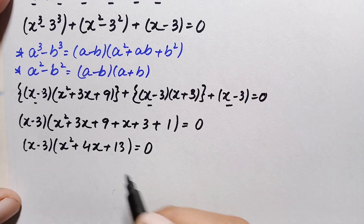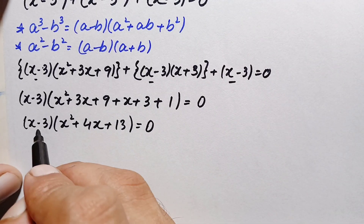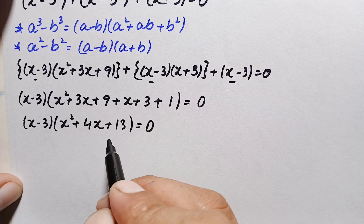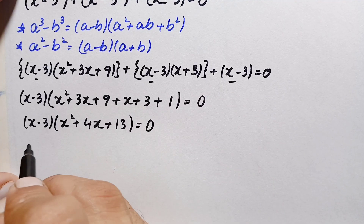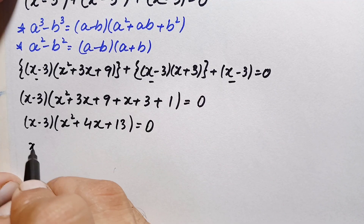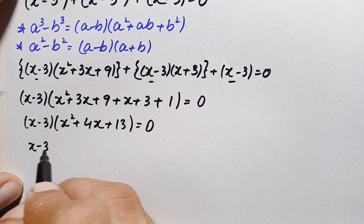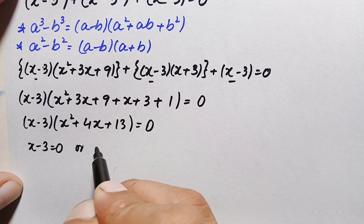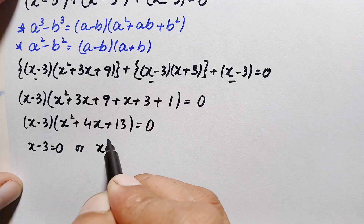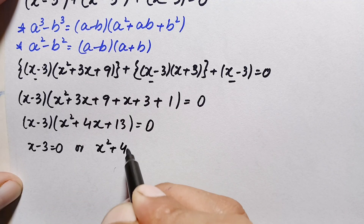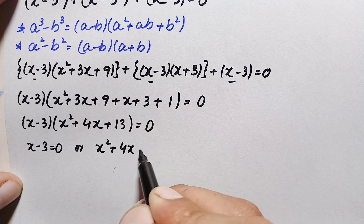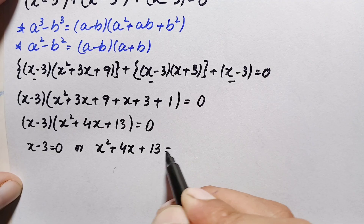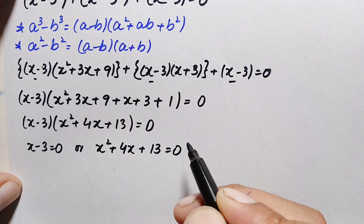Since the product of the two expressions equals zero, either one expression is zero or the other is. So we write: x minus 3 equals 0, or x squared plus 4x plus 13 equals 0.